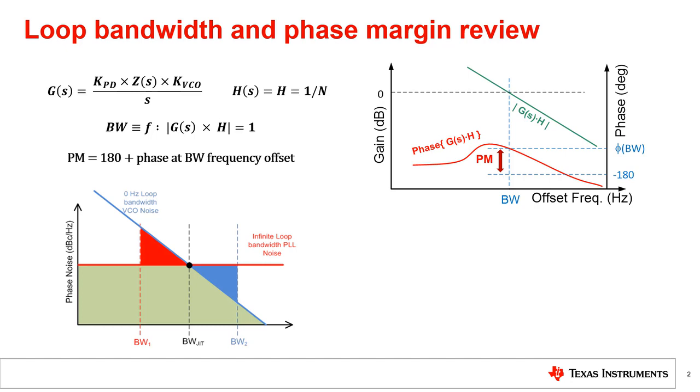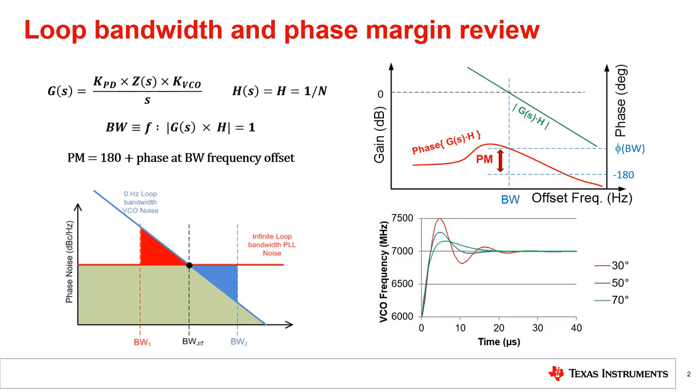Choosing the loop bandwidth designated as BW equal to BW_JIT, which is the loop bandwidth which gives the minimum jitter, will give you the minimum jitter of the PLL. This is a good starting point. You can then adjust the loop bandwidth to optimize for lock time or reduce spurs. Decreasing the bandwidth to BW1 adds the red portion to the phase noise, and increasing BW to BW2 adds the blue portion of the phase noise. Higher phase margins are desirable for reducing jitter and high stability. Lower phase margins are typically used to reduce spurs. However, they add ringing to the transient response.